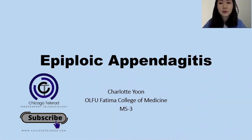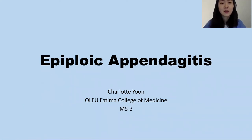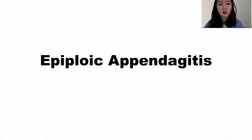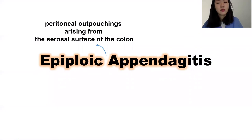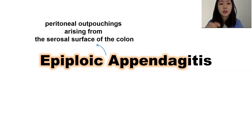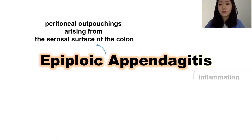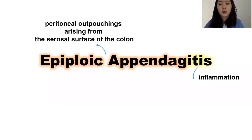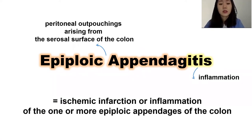My presentation topic is on Epiploic Appendagitis. From the name, 'epiploic appendages' are tiny peritoneal outpouchings found on the surface of the colon, and '-itis' is the suffix for inflammation. So it means there's an ischemic infarction or inflammation of one or more epiploic appendages of the colon.